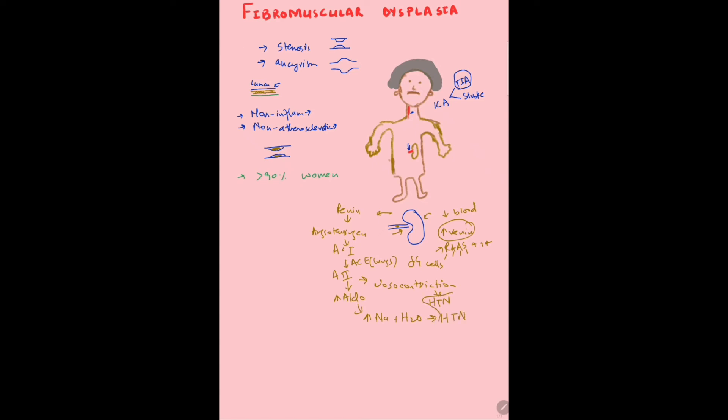The hypertension in fibromuscular dysplasia is really resistant. Unless you remove or correct that obstruction, you're going to continue having hypertension because the kidney will continue to release renin. This was the mechanism of hypertension that occurs in fibromuscular dysplasia.